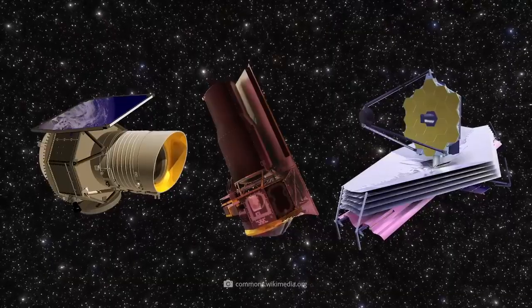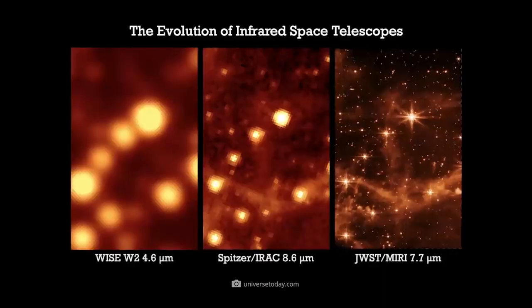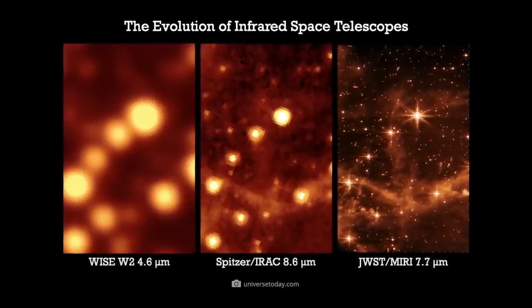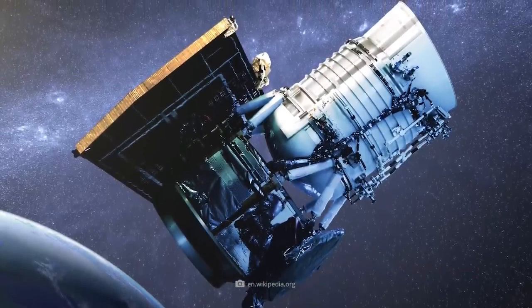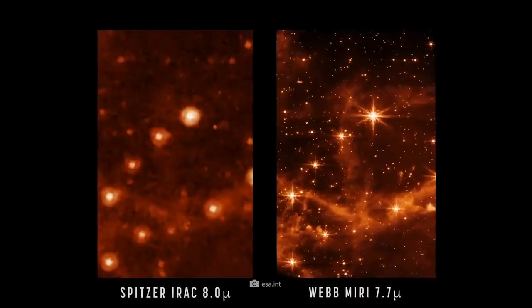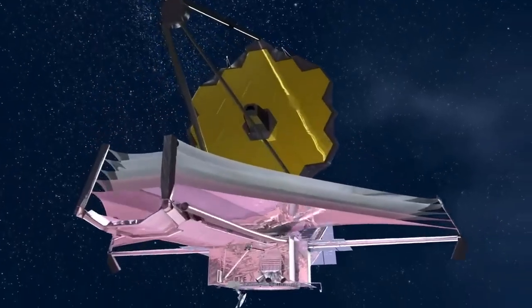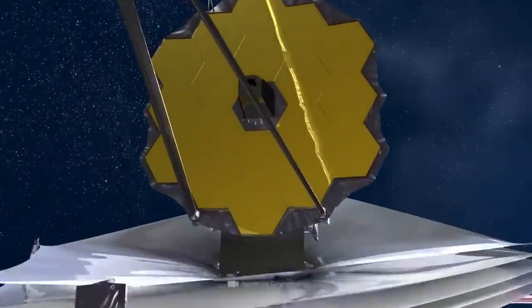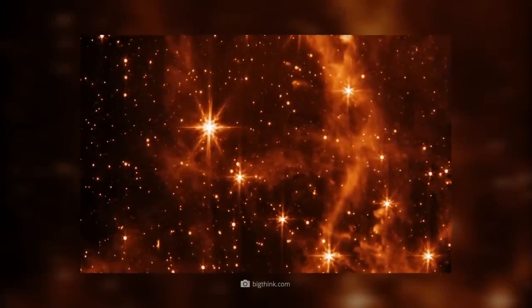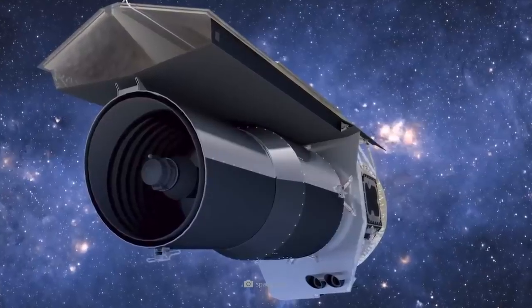Although the images produced by WISE, Spitzer and Webb depict one and the same region of the sky, they could not be more different in terms of quality and detail. While the WISE image shows nothing more than a blurry collection of coarse points of light, we can at least make out something like individual structures on the Spitzer image. What Webb captured for us finally shows us the sky in its true glory. On the much sharper image, we see countless sparkling shapes and complex cloud structures that we could not even guess at in the previous images.